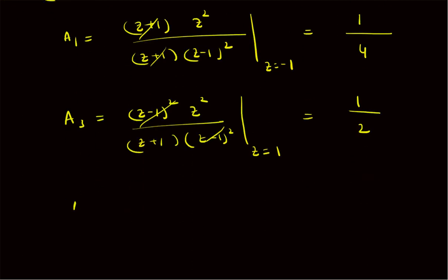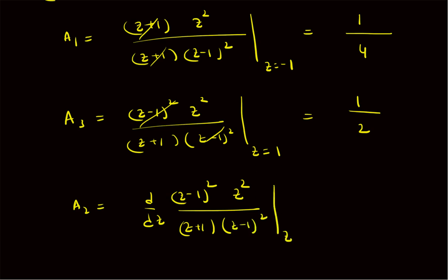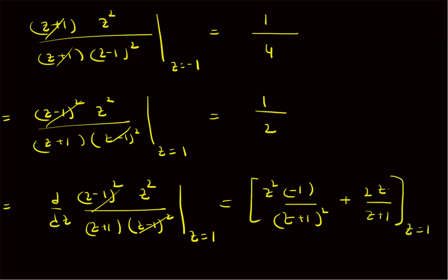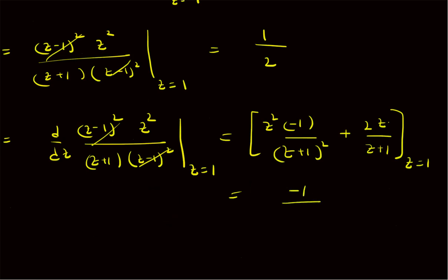To find A₂ we use the derivative formula: A₂ = d/dz [(z-1)² × X(z)/z] evaluated at z = 1. The (z-1)² terms cancel, leaving z²/(z+1). Taking the derivative gives: -z²/(z+1)² + 2z/(z+1), evaluated at z = 1. This equals -1/4 + 2/2 = -1/4 + 1 = 3/4. So A₂ = 3/4.